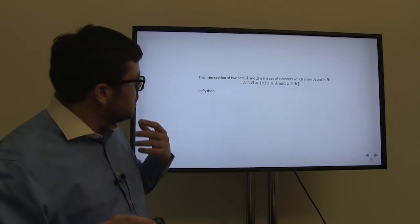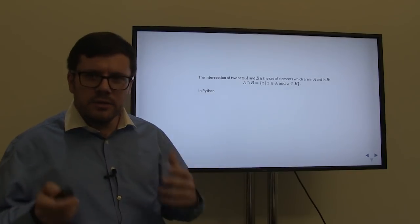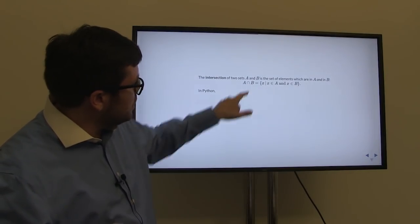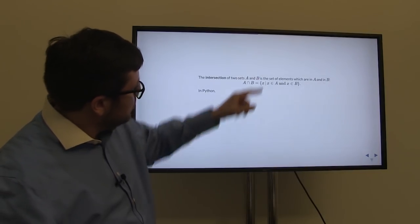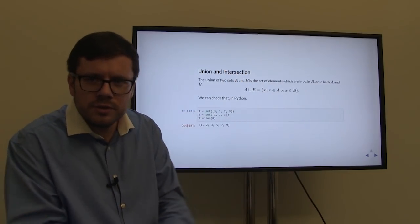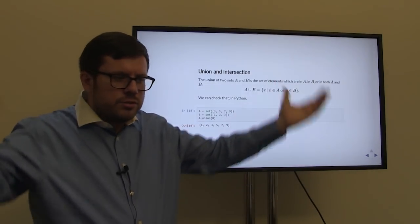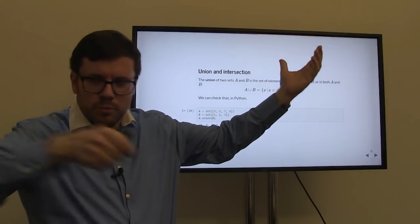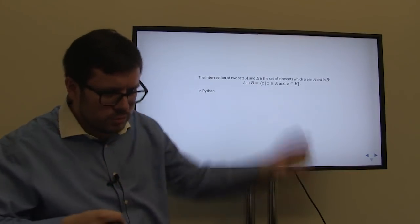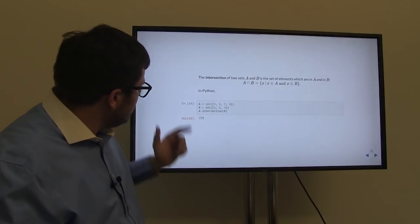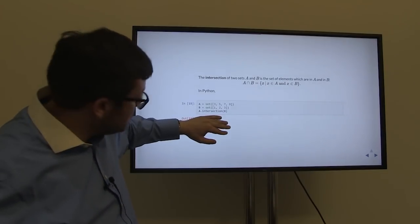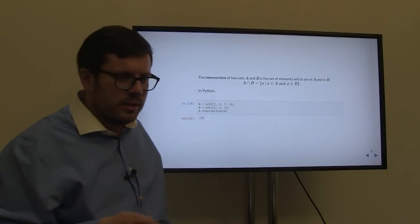The intersection of two sets A and B is the set of elements which are in A and also in B. We write this using the intersection sign, which is like an upturned version of the union symbol. Union is very inclusive — like a cup that embraces everything; intersection is more exclusive, so we turn it upside down. In Python, for sets A = {3, 5, 7, 9} and B = {1, 2, 3}, the intersection is the set containing just 3.